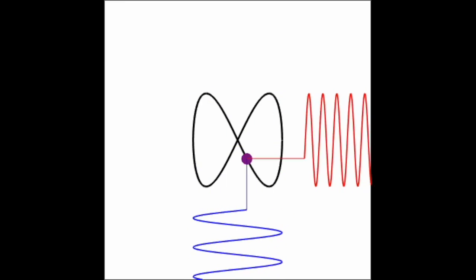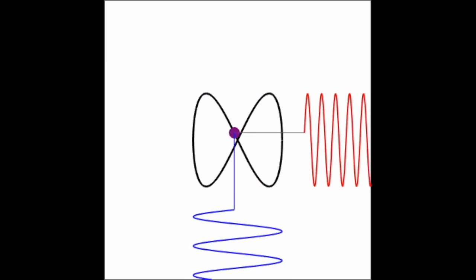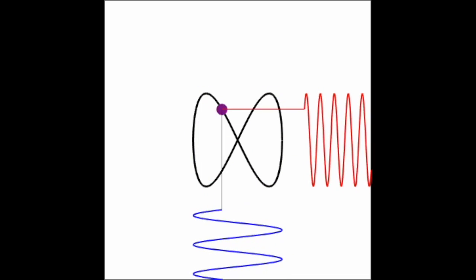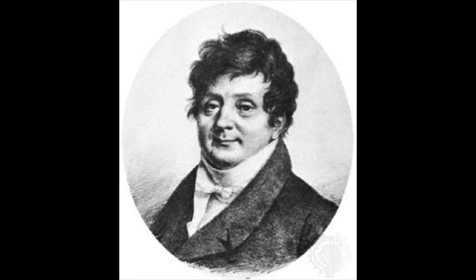So scientists and mathematicians figured out pretty early that periodic processes can often be described by sine waves. In fact, in the early 1800s, Joseph Fourier showed that any periodic signal can be written as a sum of sine waves.